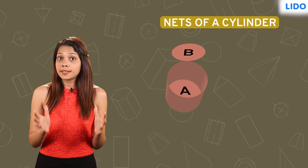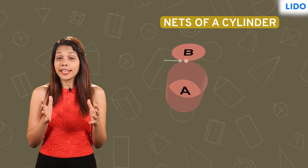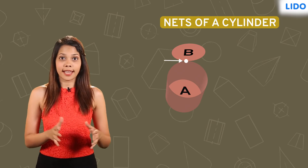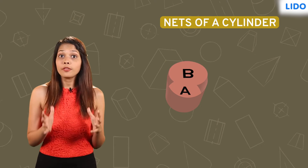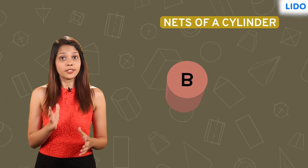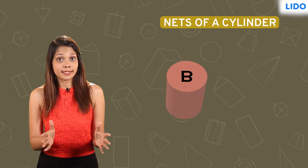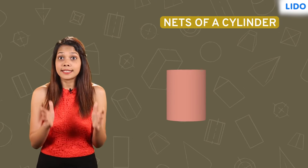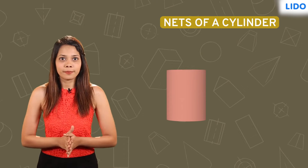All we have to do now is cover it at the top. As you can see, a part of circle B is attached to the edge of the rectangle. Let's place this circle on top of the hollow cylinder to close it.